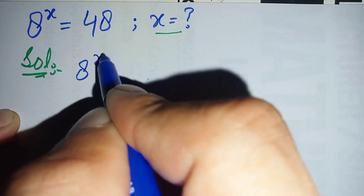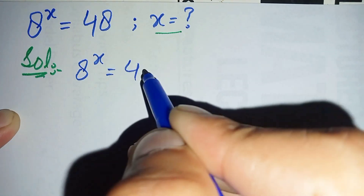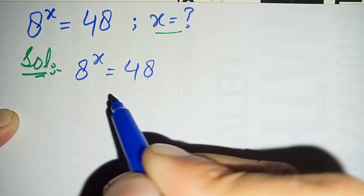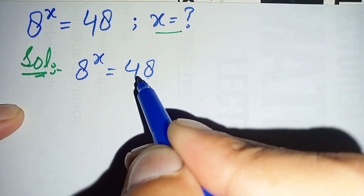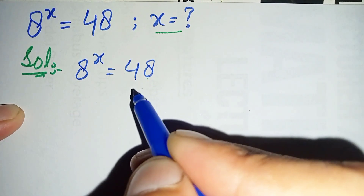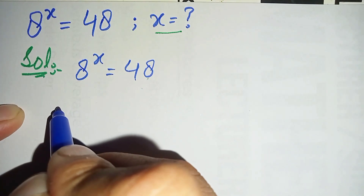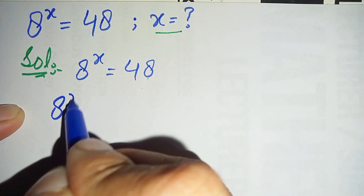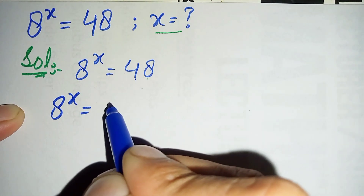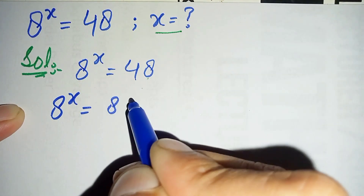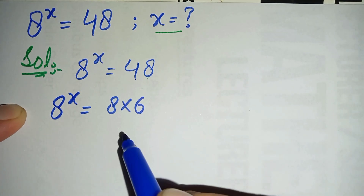The problem is 8 raised to power x is equal to 48. First, we will factorize 48 as the product of 8 times 6. So we can write this equation as 8 raised to power x is equal to 8 times 6, which is 48.